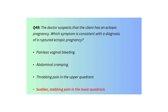Q49. The doctor suspects that the client has an ectopic pregnancy. Which symptom is consistent with a diagnosis of a ruptured ectopic pregnancy? Painless vaginal bleeding, abdominal cramping, throbbing pain in the upper quadrant, or sudden stabbing pain in the lower quadrant.